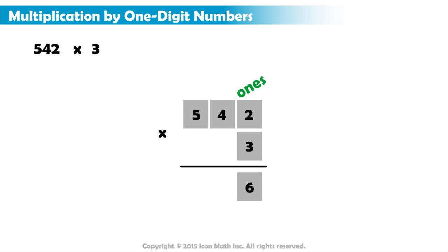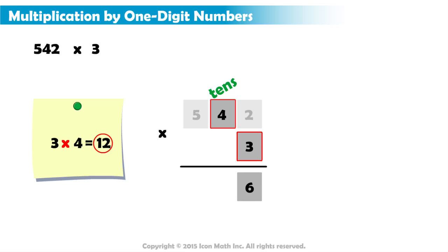The digit in the tens place comes next. 3 multiplied by 4 is 12. Be careful! We can't put two digits in the same column. Since 12 is a two-digit number, we write down the 2. Then, we place the 1 above the next digit in line for multiplication.